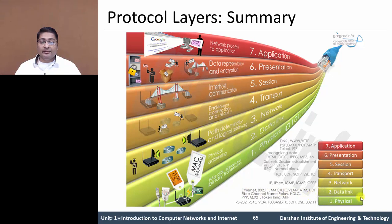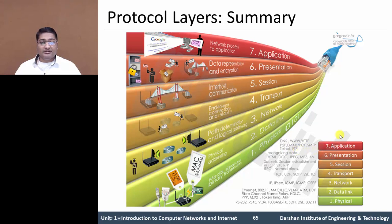The protocols in TCP/IP include IP, ICMP, IGMP, OSPF at the Network or Internet Layer. In the Transport Layer: TCP and UDP. At the Session Layer: Socket Session Establishment. At the Presentation Layer: HTML documents, JPG, MP3, AVI file extensions. At the Application Layer — Layer 7: DNS, WWW, HTTP protocol, SMTP email protocol, Telnet, FTP — File Transfer Protocol. This is a summary of the OSI layers as well as the TCP/IP protocol suite.